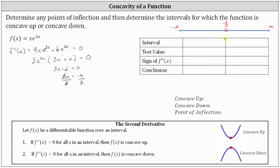This breaks the domain into two subintervals: the open interval from negative infinity to negative 2/3 on the left, and the open interval from negative 2/3 to infinity on the right. We are going to pick a test value in each subinterval to determine the sign of the second derivative in each interval. Remember, the sign of the second derivative indicates whether f of x is concave up or concave down. For the interval from negative infinity to negative 2/3, let's use negative 1. For the interval from negative 2/3 to infinity, let's use x equals 0.